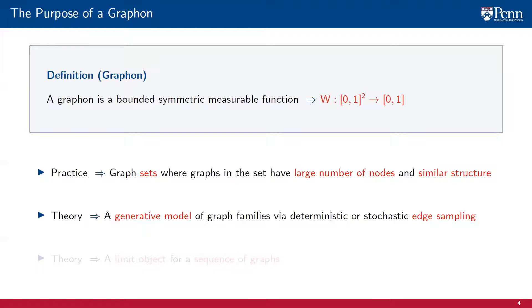In theory, the graphon provides a generative model for graph families. We can generate graphs through stochastic or deterministic sampling of the graphon. These sampled graphs share a common property, which is that they are sampled from the same graphon.